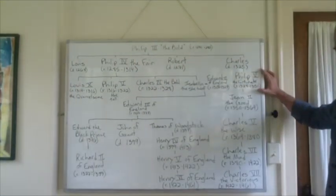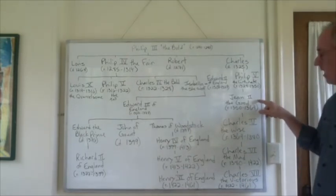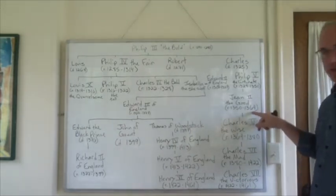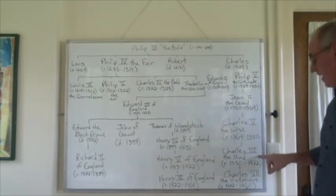On the French side, Philip V has a son, so when he dies, he's succeeded by Jean the Good, who reigns from 1350 to 1364, who is succeeded by his son, Charles the Wise, who is succeeded by his son, Charles the Mad.